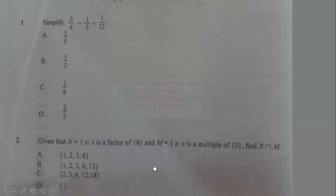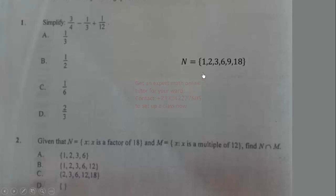Question 2: Given that N is a set such that x is a factor of 18, and M is a set such that the elements are multiples of 12, find M intersection N. First, the factors of 18 are: 1, 2, 3, 6, 9, 18.